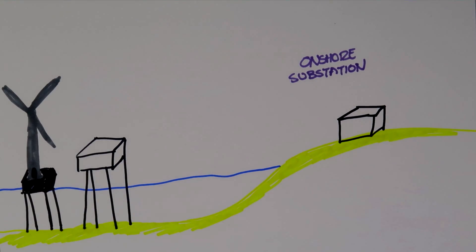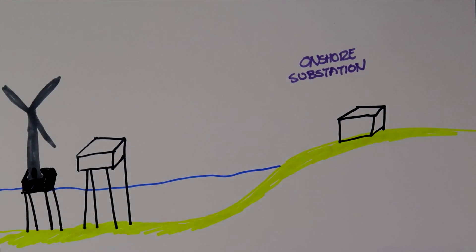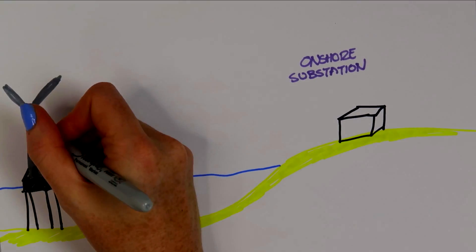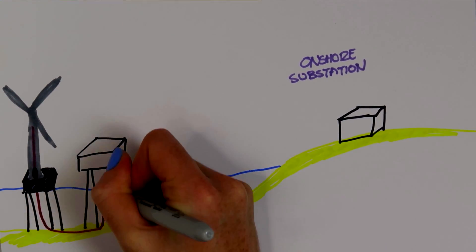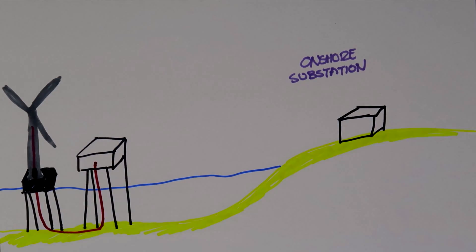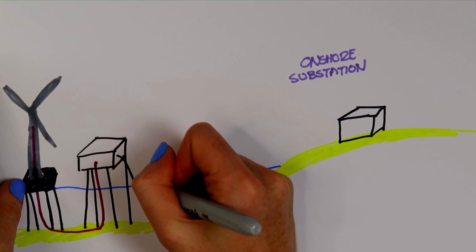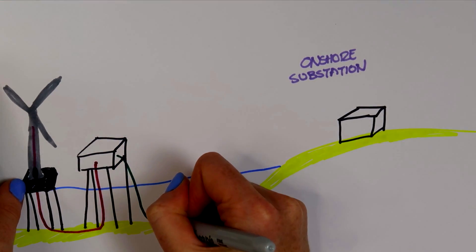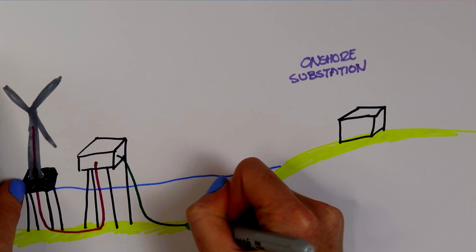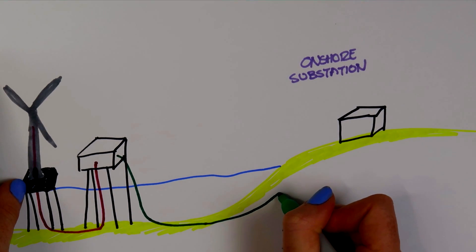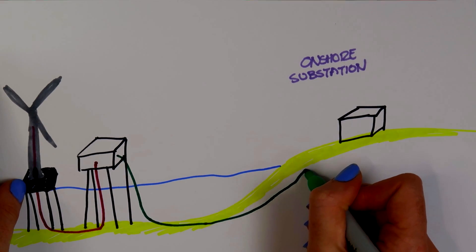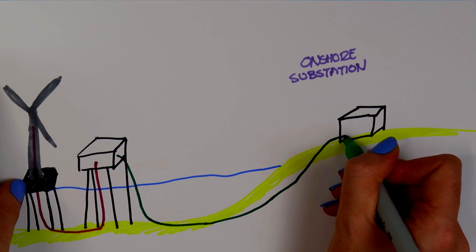Each string of turbines is sending electrical energy to the substation — then what happens? All of the electrical energy is combined together and then transferred to shore by a larger cable called the export cable, because you're exporting the electricity to shore.